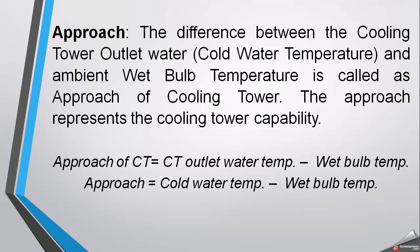The other term used in this calculation is approach. The difference between the cooling tower outlet temperature (cold water temperature) and the ambient wet bulb temperature is called the approach of the cooling tower. The approach represents the cooling tower's capability — how much it can reduce the temperature of the hot water coming from the system. Approach equals cold water temperature minus wet bulb temperature.